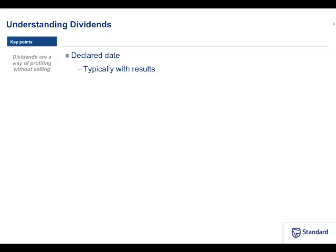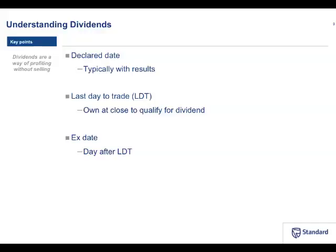Some important dates: first is the declared date — as mentioned, the dividend will typically be declared with results, essentially 99.9% of the time. The next important date is Last Day to Trade, or LDT. You need to hold the shares at the close of business on that LDT in order to receive the dividend. When you buy them is not important, and when you sell them is not important, as long as you hold them at close of business on LDT. Typically that's going to be a Friday. If you hold those shares when the market closes on Friday, you qualify for the dividend — whether you only bought them that morning or bought them five years ago.